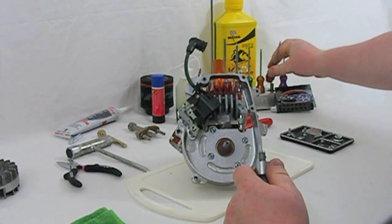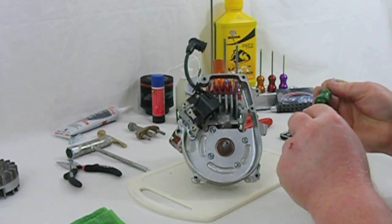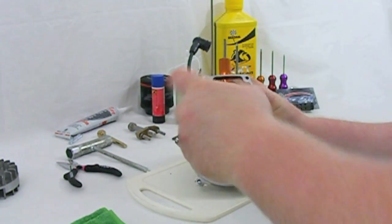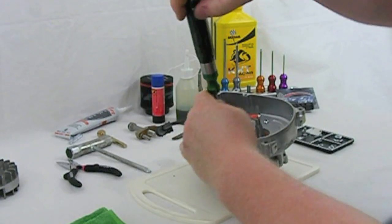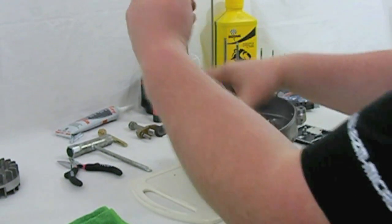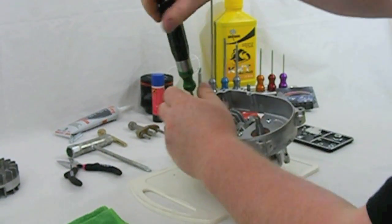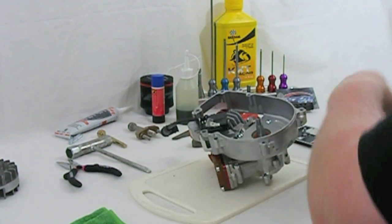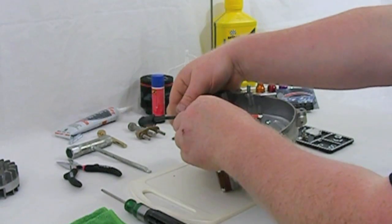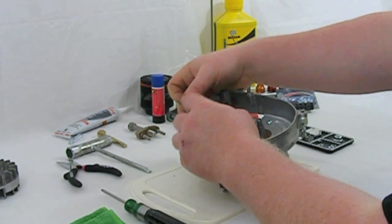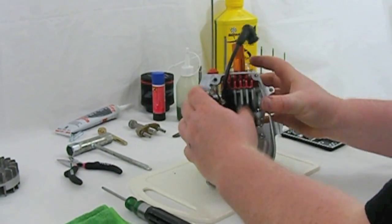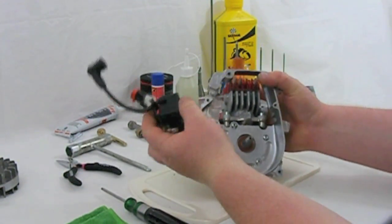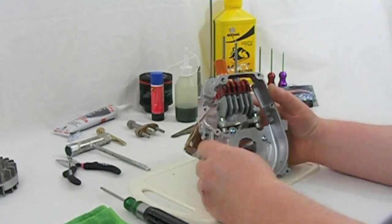Next we need to remove the ignition coil. This is a 3mm socket cap screw. Just ease the rubber grommet out of the HT lead and just feed the stop switch back through.